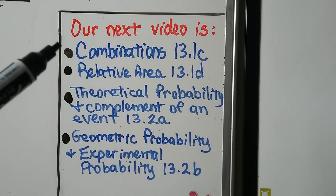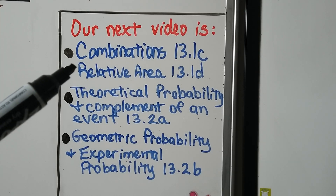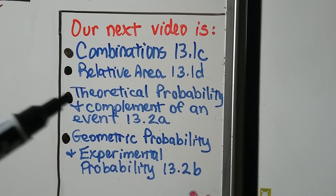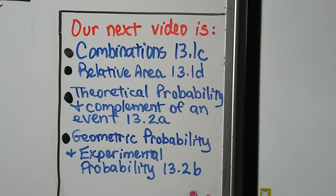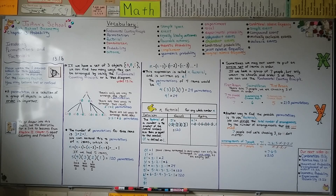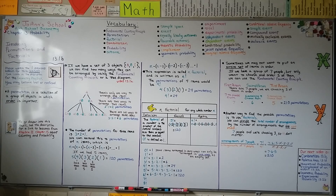The next part of this lesson is going to be about combinations, and then we're going to finish with relative area before moving on to 13.2, which is about theoretical, geometrical, and experimental probability. A permutation of a set is an ordered arrangement of that set without repetition. We can find the number of permutations by using factorials — now you know what the exclamation point is. Have a great day, and I'll see you for the rest of the lesson. Bye.